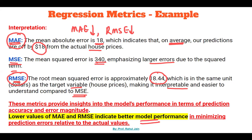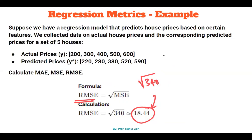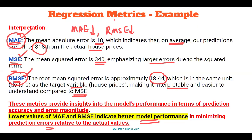If the error is around ±5 or ±10, that is acceptable, but ±100 or ±200 means a larger error and the model is not performing well. So, if MAE and RMSE are low, it indicates the model's performance is better at minimizing prediction error relative to actual values. These are the regression metrics we discussed — Mean Absolute Error, Mean Squared Error, and Root Mean Squared Error. I hope this topic is clear. Please subscribe and stay tuned. Have a nice day!